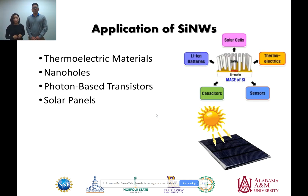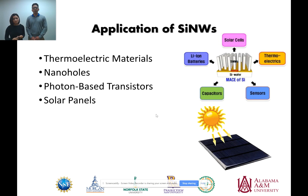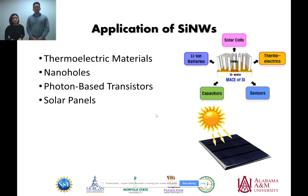We continue with the applications of silicon nanowires. Silicon nanowires can be applied in the domain of thermoelectric materials, nanohole arrays, and photon-based transistors, and solar panels. Thermoelectric materials generate current through a change in temperature. Nanohole arrays are used in the development of superlenses and photon-based transistors, which are an alternative to electron-based transistors that dissipate more energy. And lastly, solar panels become much more efficient with silicon nanowires, which absorb photons at almost 100%, allowing us to convert almost all energy into electricity.